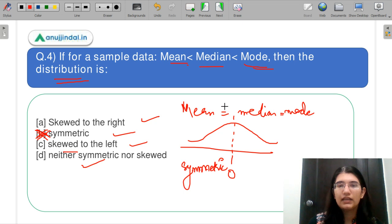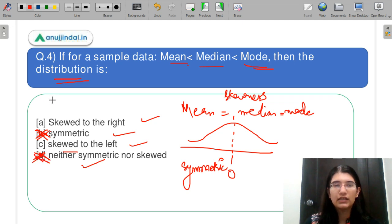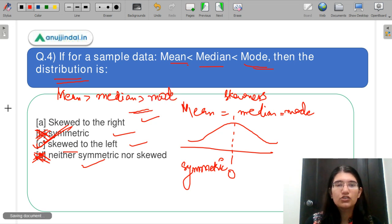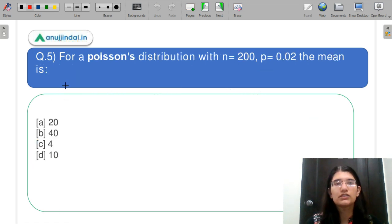So you can also eliminate D part. Now I have given you a big hint here and now you need to tell me in the chat box, what do you think is the correct answer? So C is your correct answer. If it would have been like mean is the greatest, median is smaller than that, and mode is the smallest, then aapko yahan pe skewed to the right hota. But here your answer is C.